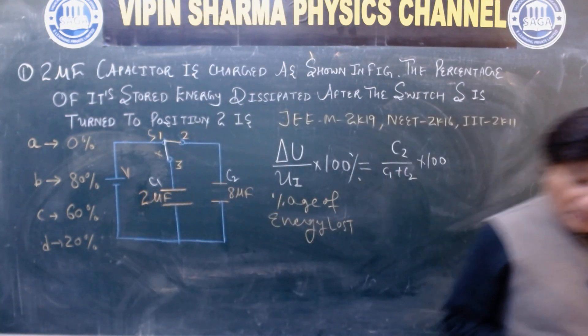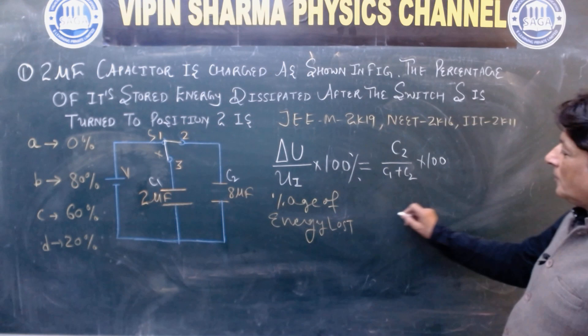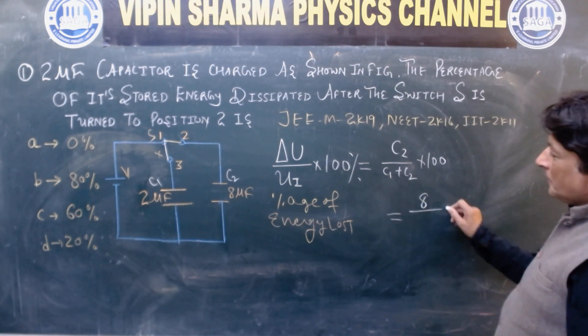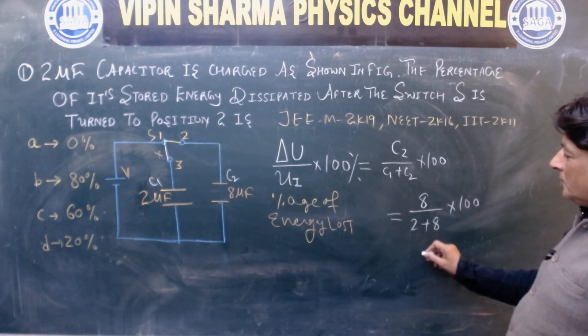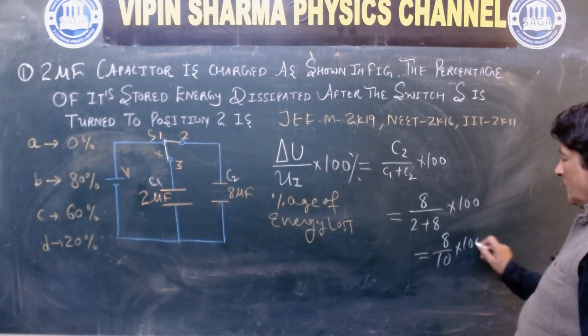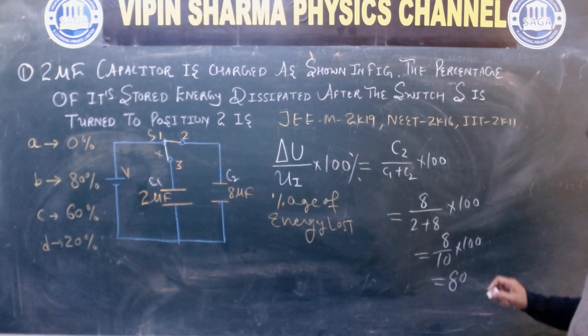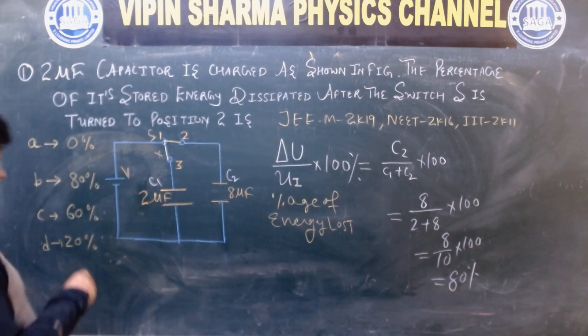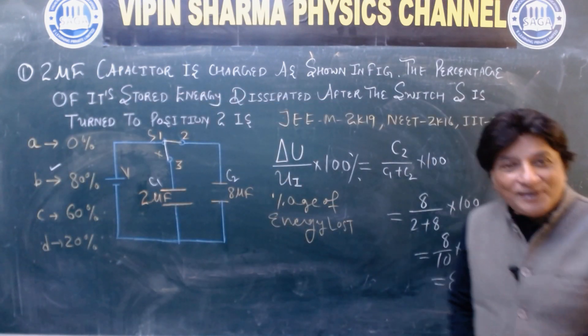This is the percentage. This is C2 upon C1 plus C2 into 100. What is this? This is percentage of energy lost. Now we put values in this. C2 is 8, C1 is 2. So 8 upon 10 into 100. So this is 80. So 80 percent is the energy lost. So this is the answer.